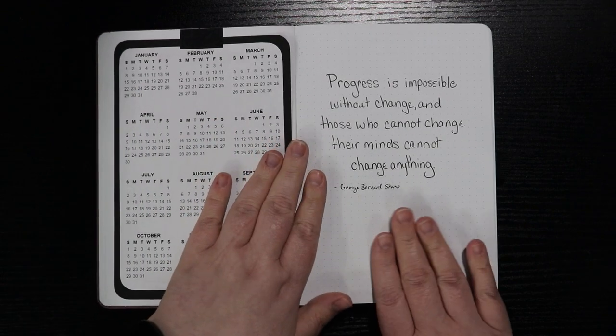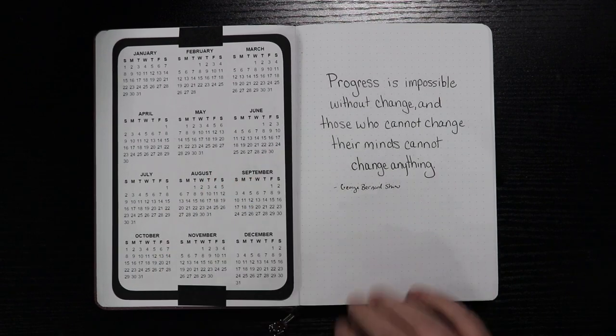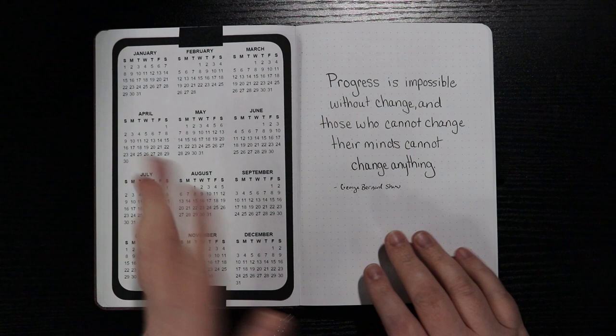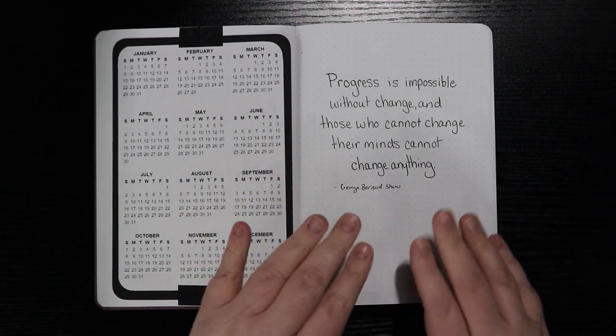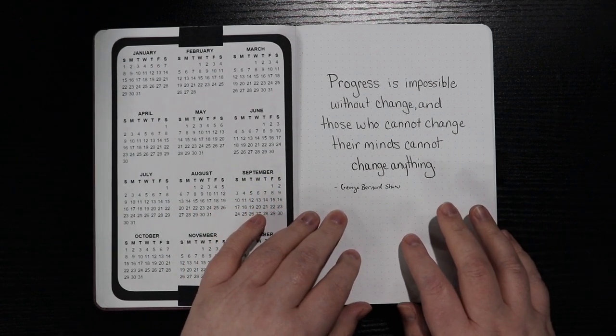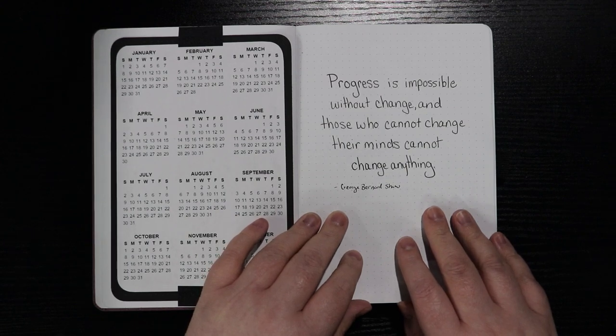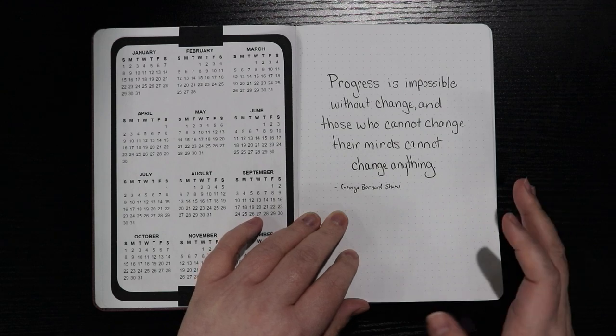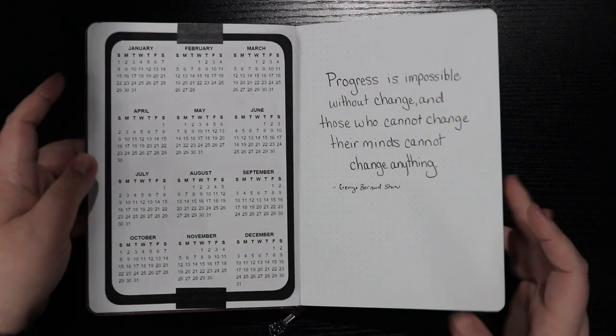If you were not here for my 2023 bullet journal setup, I will link that in the description box down below. But essentially my word of the year for 2023 is progress. And so I got this quote that has to do with progress that I thought worked really well. And it is progress is impossible without change and those who cannot change their minds cannot change anything. And that's by George Bernard Shaw. I don't know if he's a good human or not. I didn't look him up. He could be an absolute POS. I don't know. But I liked the quote.